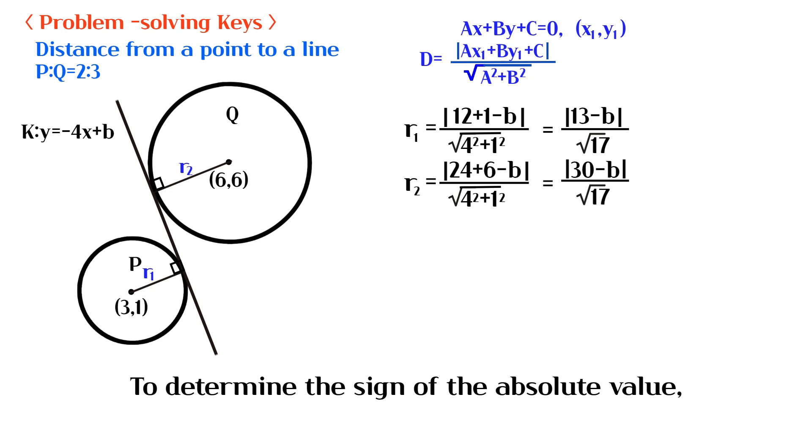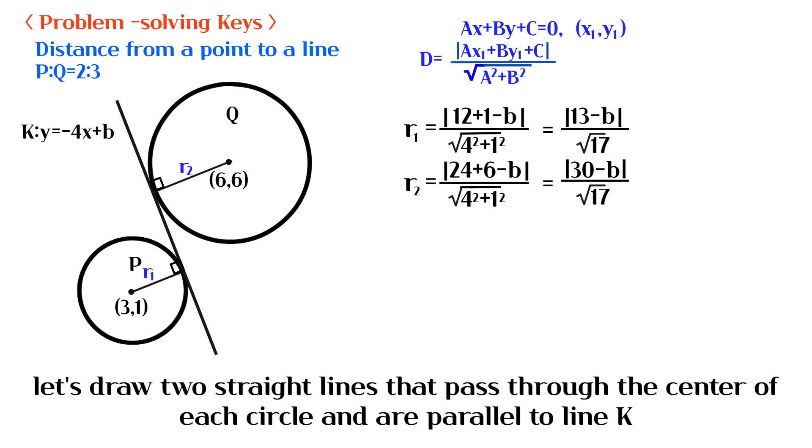To determine the sign of the absolute value, let's draw two straight lines that pass through the center of each circle and are parallel to line K.